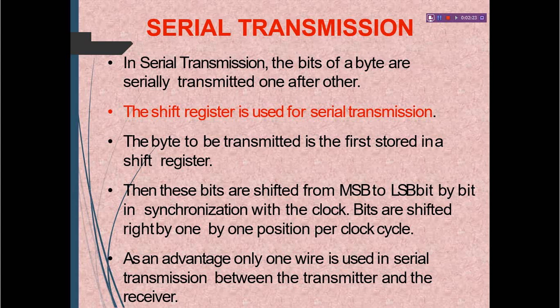The byte to be transmitted is first stored in a shift register. The byte which will move from the sender device to receiver device is first stored in the shift register. Then the bits are shifted from MSB to LSB — most significant bit to least significant bit — bit by bit in synchronization with the clock. Bits are shifted one position per clock cycle.